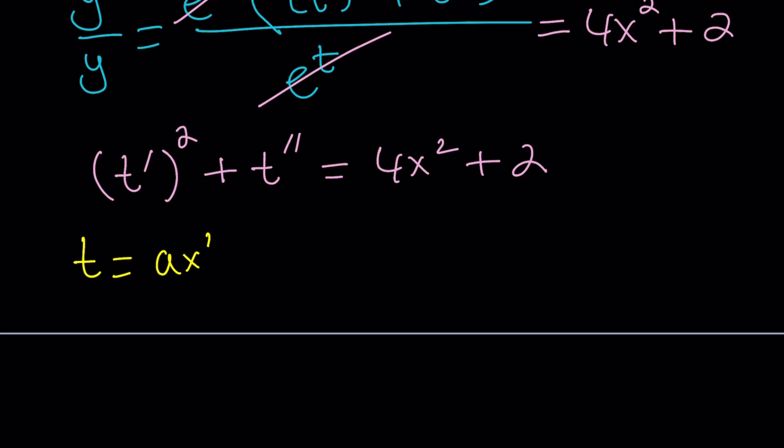So now let's cancel out e^t that can never be zero, and we're going to end up with something like this. But remember in the original equation, we had a polynomial on the right-hand side. So now we can set this equal to that. Let's make it a little cleaner. (t')² + t'' = 4x² + 2. Remember, t is a function of x.